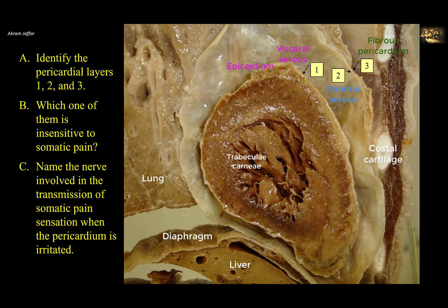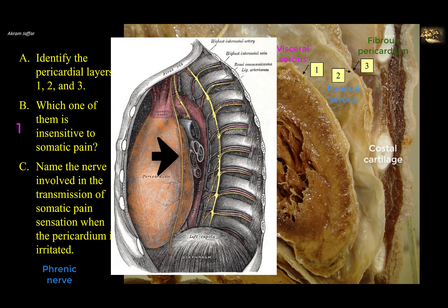Like any other serous membrane — such as pleura and peritoneum — the visceral layer is supplied by autonomic nerves, so the visceral pericardium is insensitive to somatic pain. The parietal layer and the fibrous pericardium are supplied by somatic nerve fibers, and the nerve involved in transmission of somatic pain is the phrenic nerve. The phrenic nerve passes in close proximity to the pericardium and is not only motor to the diaphragm but is sensory to the fibrous pericardium and the parietal layer of serous pericardium, as well as the mediastinal parietal pleura and the central part of the diaphragmatic pleura.